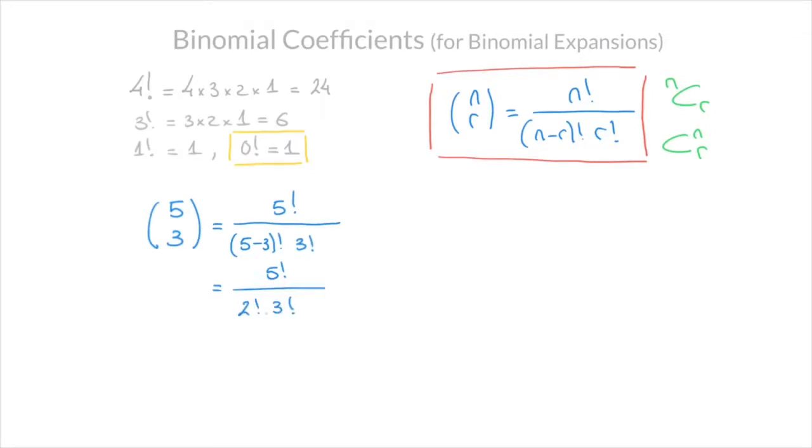And now, using what we know of factorials, we can go ahead and write that this equals 5 times 4 times 3 times 2 times 1 over factorial 2, which is 2 times 1, times factorial 3, which is 3 times 2 times 1. And we notice now that we can simplify this quite a bit. Indeed, we have 3 times 2 times 1 on the numerator as well as on the denominator, so we can go ahead and cross those out, and we're now left with 5 times 4 over 2 times 1, which is just 2.